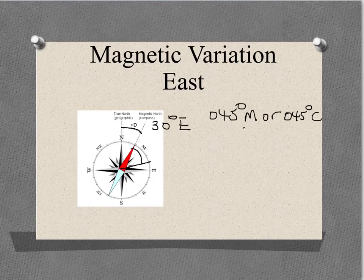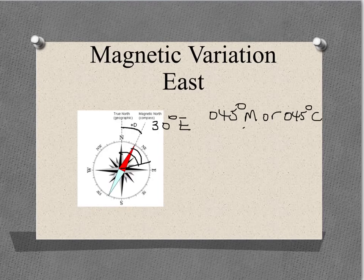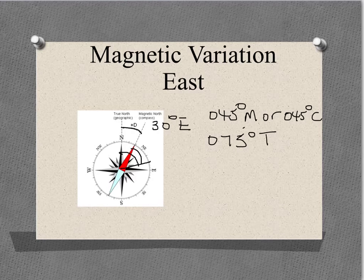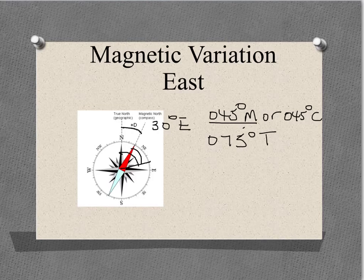If we wanted to know the true bearing of our object, then we would measure from true north, and it would be an angle, again in a clockwise direction, from true north to our object. The true bearing would be 075 degrees true. We can see that the difference between our compass bearing of 45 degrees and our true bearing of 75 degrees is the variation of 30 degrees.